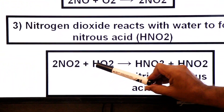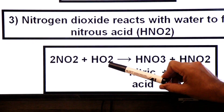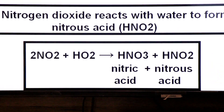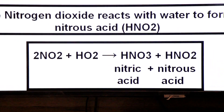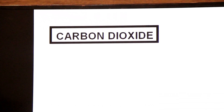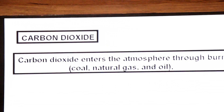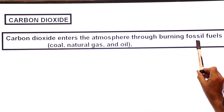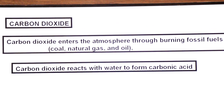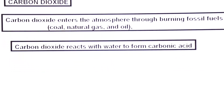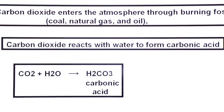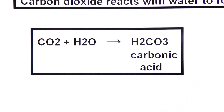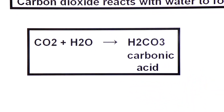Here you see 2 molecules of nitrogen dioxide combine with water droplets to form nitric acid and nitrous acid. Now carbon dioxide: carbon dioxide enters the atmosphere through burning of fossil fuels such as coal, natural gas, and oil. Carbon dioxide reacts with water to form carbonic acid. When carbon dioxide combines with clouds, H2CO3 carbonic acid is formed.